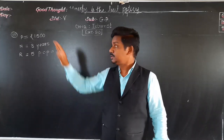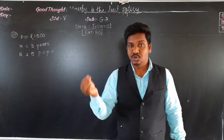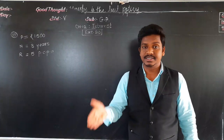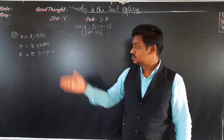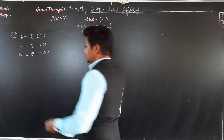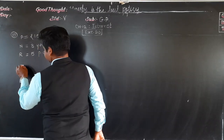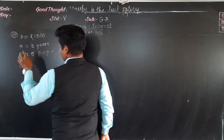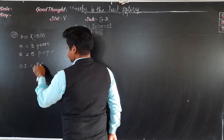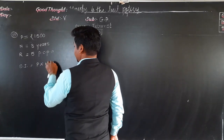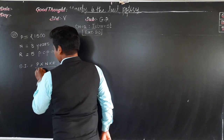Here the principal we know, but the interest we do not know — what will be the interest, that we have to calculate. So let us first calculate the simple interest. You know the formula for simple interest: P into N into R upon 100.